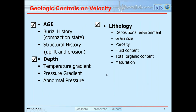There are a number of controls on velocity. The three primary ones are the age of the rocks, the depth of the rocks, and the type of lithology. Burial history, which translates into compaction state, is also important, as is structural history — uplift and erosion. Temperature and pressure, especially places where we might have abnormal pressure, can also be important.